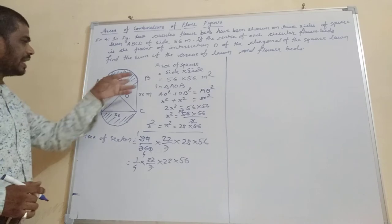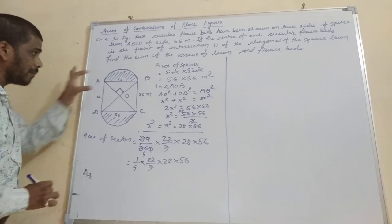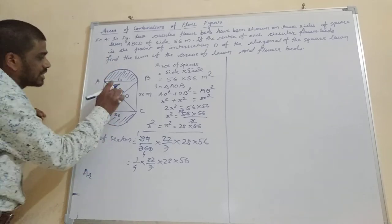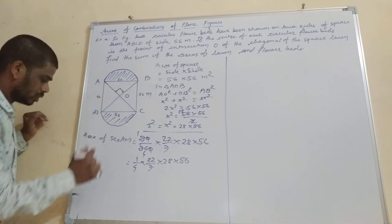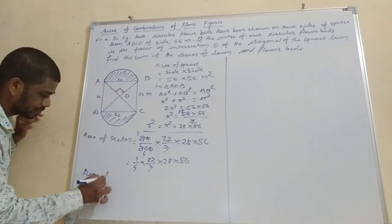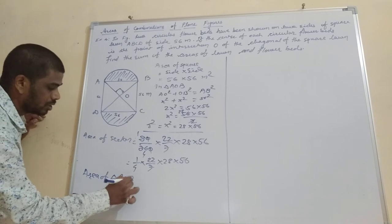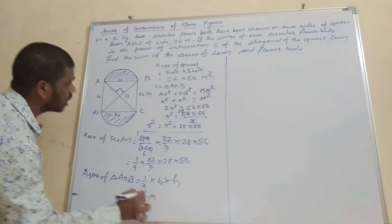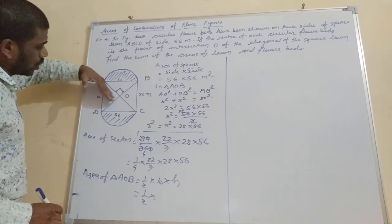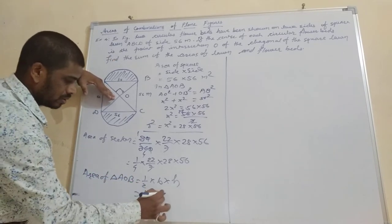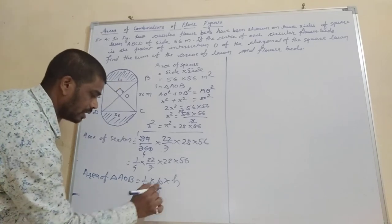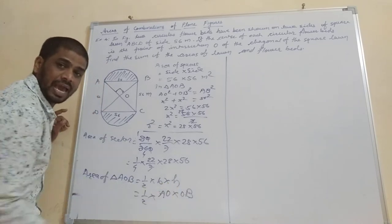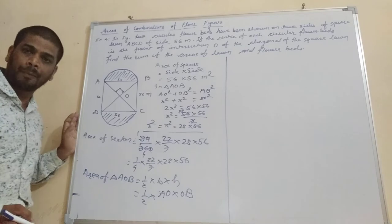Now we have to find the area of the triangle, because the area of a segment equals the area of the sector minus the area of the triangle. Triangle AOB is a right-angle triangle, so area = ½ × base × height = ½ × AO × OB = ½ × X × X = ½ × X² = ½ × 28 × 56.